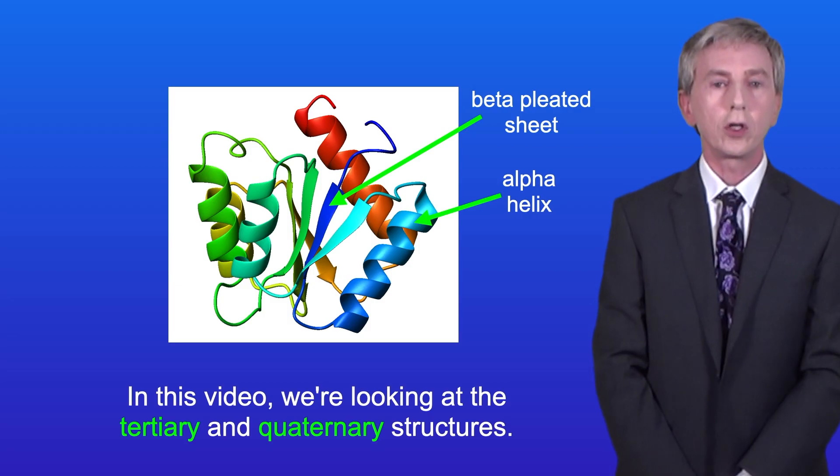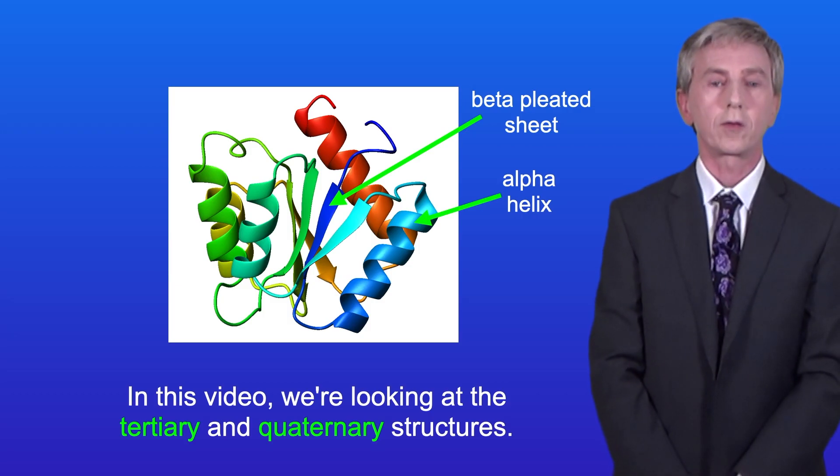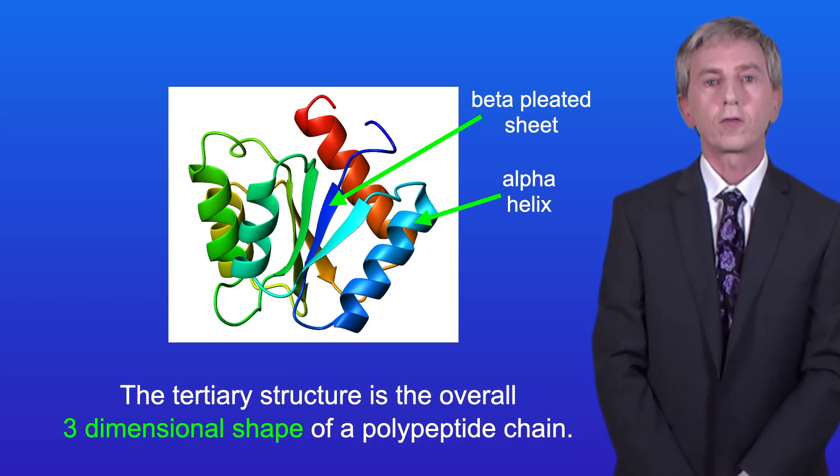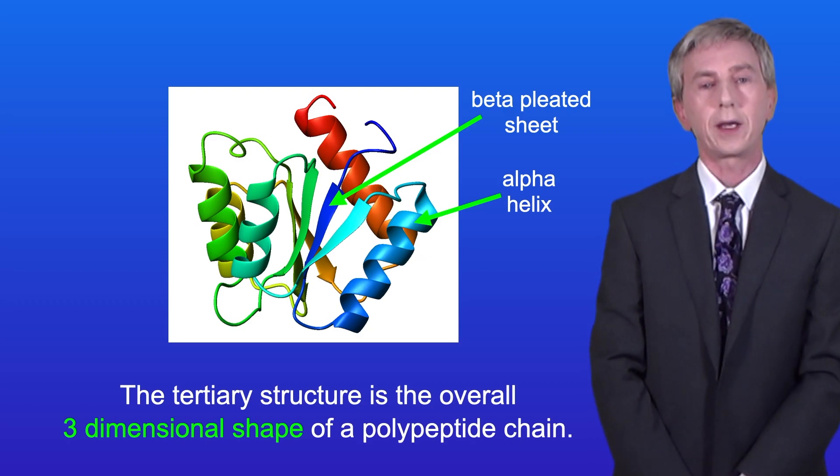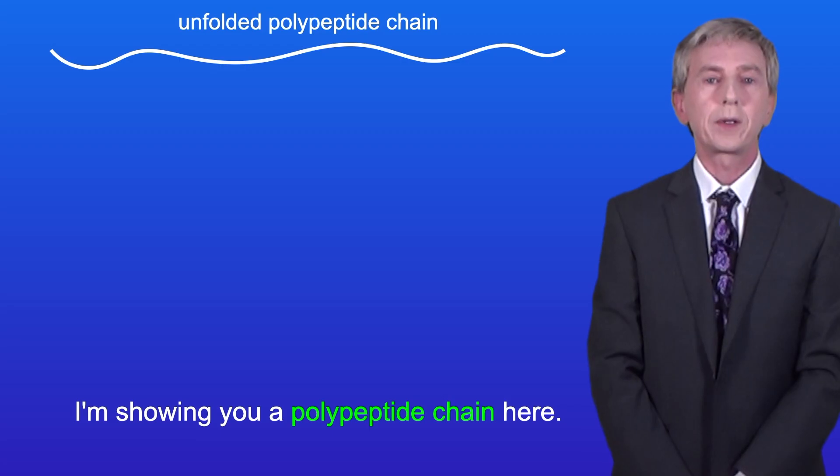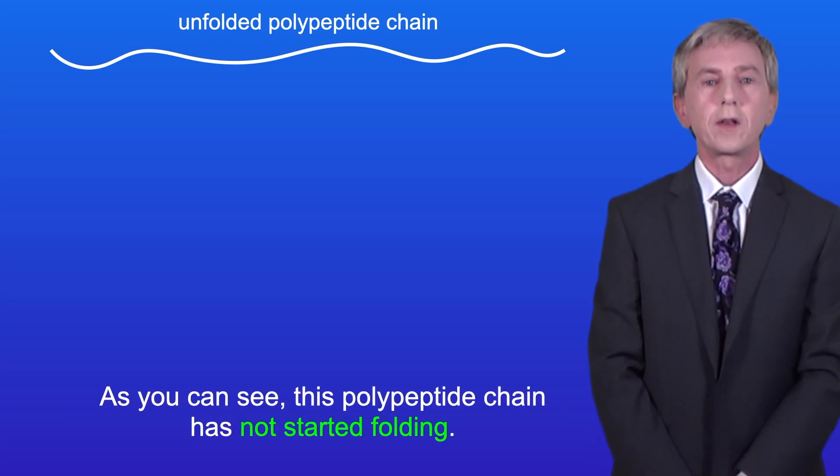In this video, we're looking at tertiary and quaternary structures. The tertiary structure is the overall three-dimensional shape of a polypeptide chain. I'm showing you a polypeptide chain here. As you can see, this polypeptide chain has not started folding.